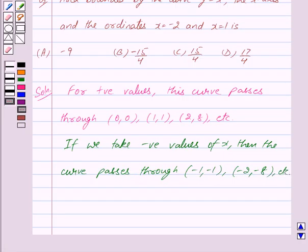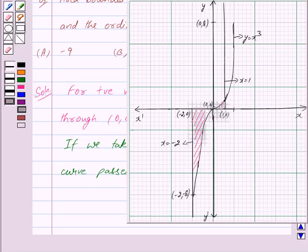Thus, one part of the curve lies in the first quadrant and the other in the third quadrant. Also, x = -2 and x = 1 are lines parallel to the y-axis. So this is the curve y = x³, this is the line x = 1, and this is the line x = -2. We have to find the area of this shaded region.